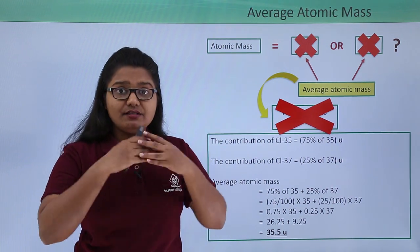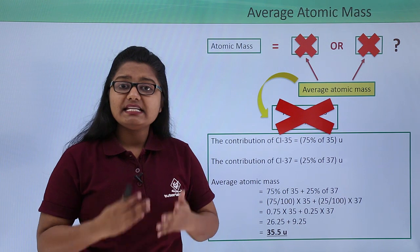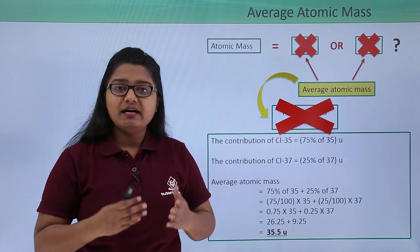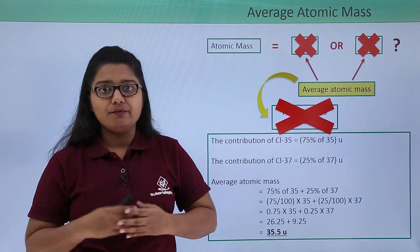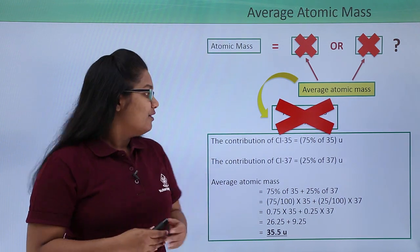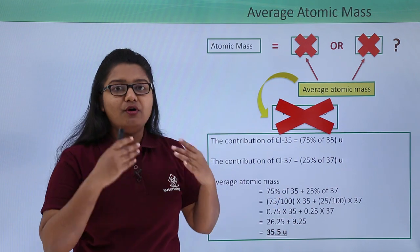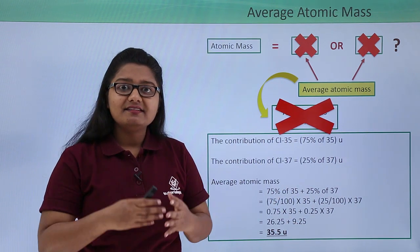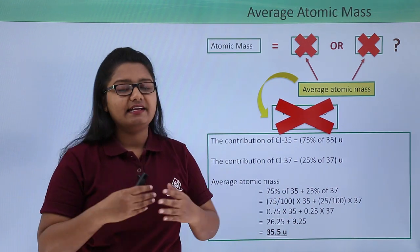Now when an element has no isotopes we can simply take its mass to be the sum of the number of neutrons and protons. But whenever an element has isotopes, we have to take the average atomic mass of all the isotopes and consider that as the mass of that element.